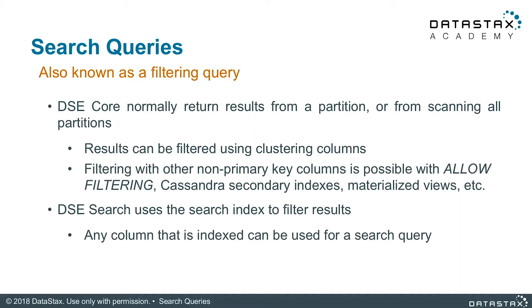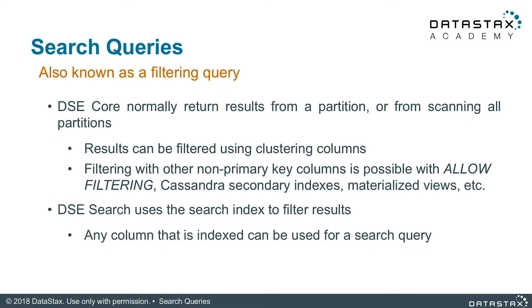Now that we've learned how to set up our search indexes, we're ready to learn how to start using them with actual search queries. As we know, DSC Core normally returns results from a partition or from scanning all partitions, even though scanning all partitions isn't recommended. We can filter out results using one or more of our clustering columns.